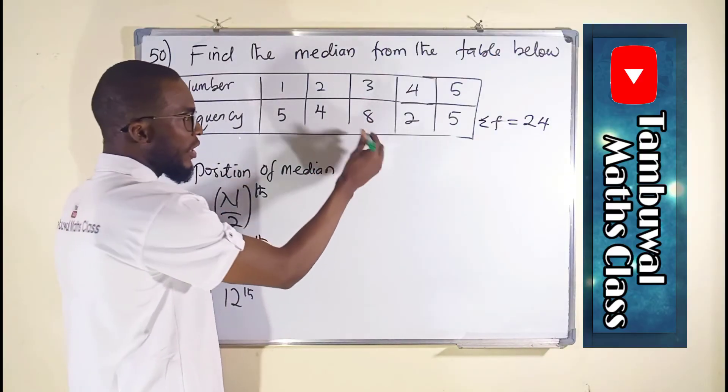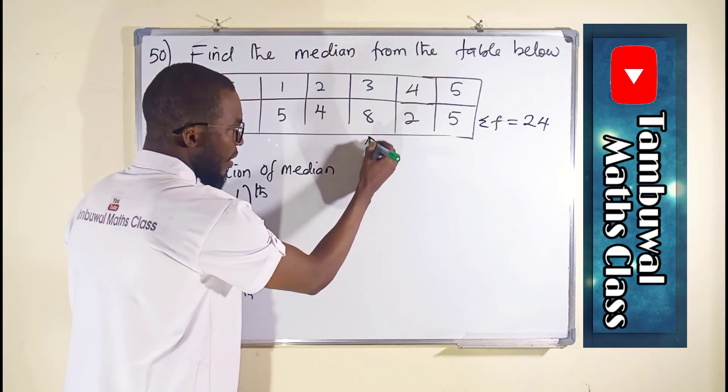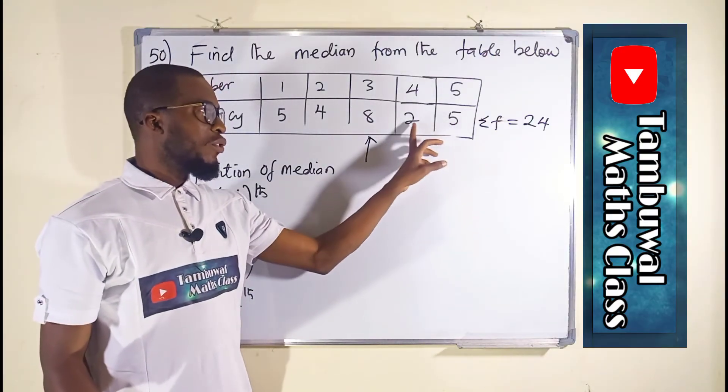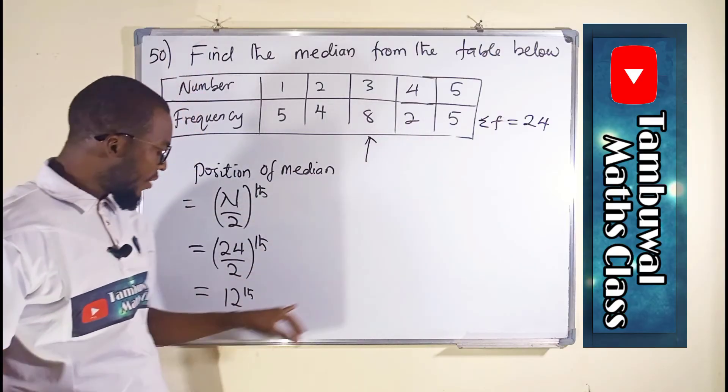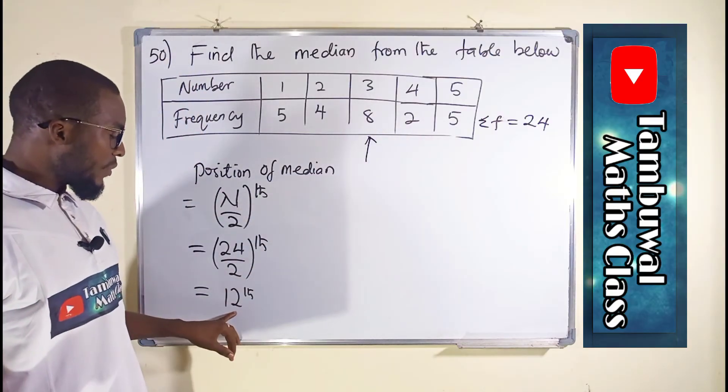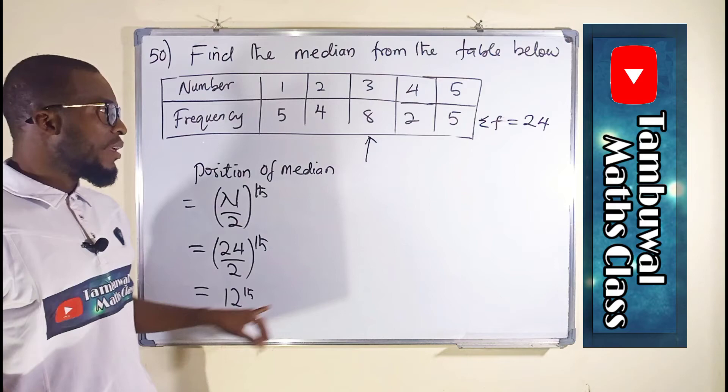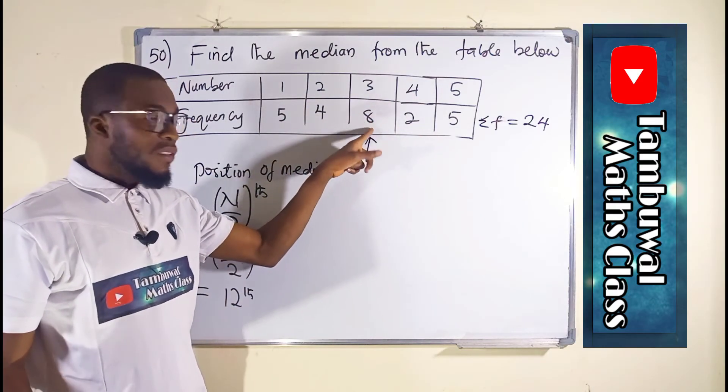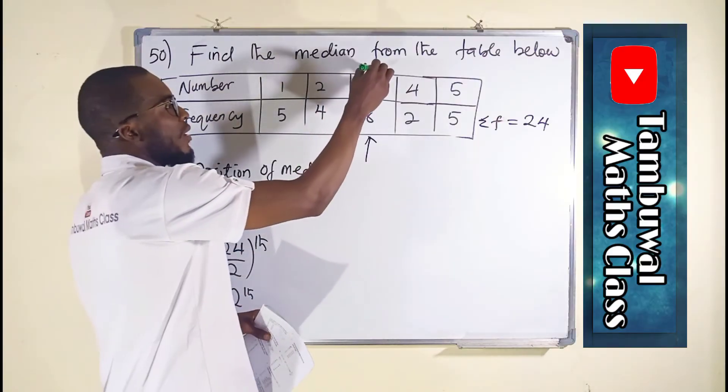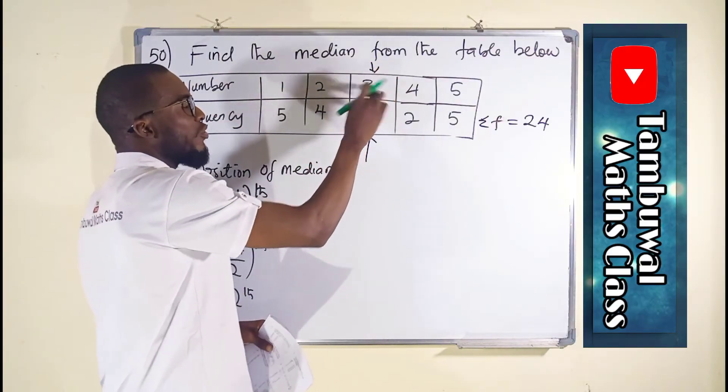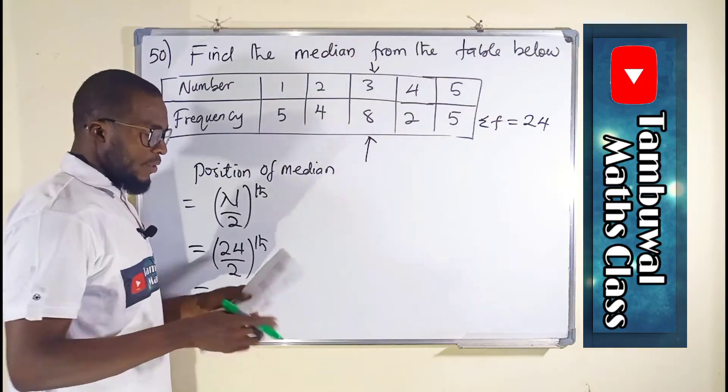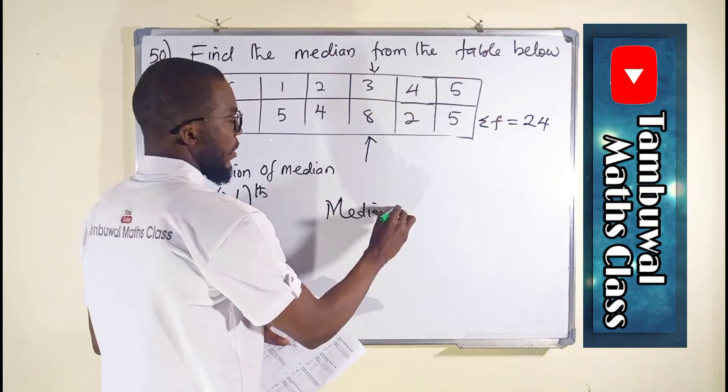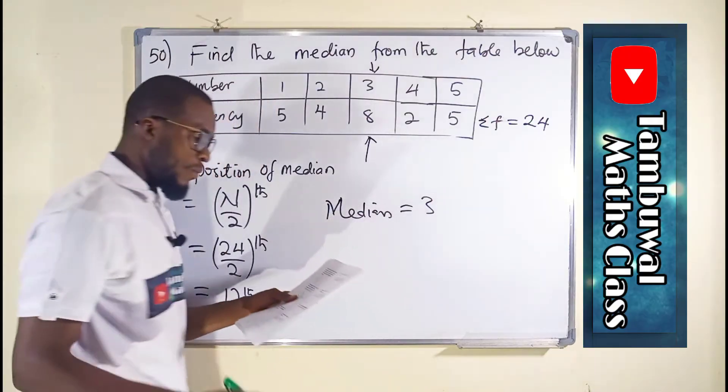If you like, you can add from the other side: 5 plus 2 is 7, and 7 is less than 12. Then 7 plus 8 is 15, therefore that position is here. And our answer is 3, because we are going to choose from the numbers. So median equals 3, which is option D.